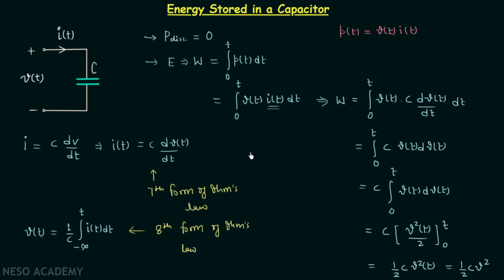Writing down the final result: the energy stored in a capacitor, represented by E_C, is equal to (1/2)·C·V².